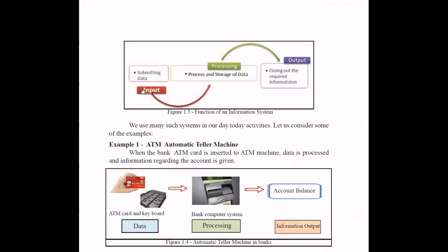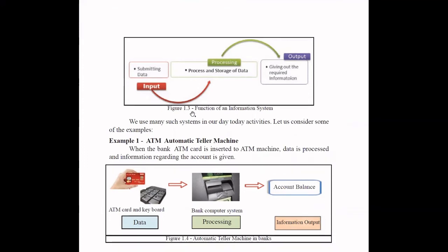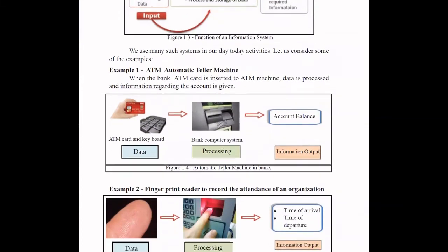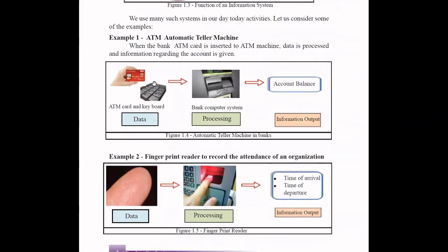If you think about simple systems like an ATM machine, the input will be inserting the ATM card and typing the PIN from the keyboard. In the back end it will do the processing, checking whether the PIN number is correct and the available balance is there. If it's to check the balance, it will output the balance. If you input some amount to be retrieved, that cash will come as the output.